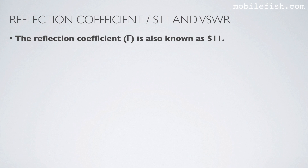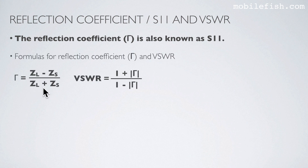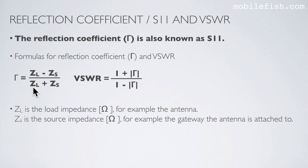The reflection coefficient gamma is also known as S11. Here is the formula to calculate the reflection coefficient and here is the formula to calculate the VSWR. In this formula, Z-load is the load impedance in ohms, for example the antenna, and Z-source is the source impedance in ohms, for example the gateway the antenna is attached to.